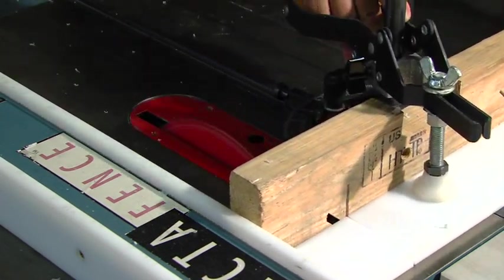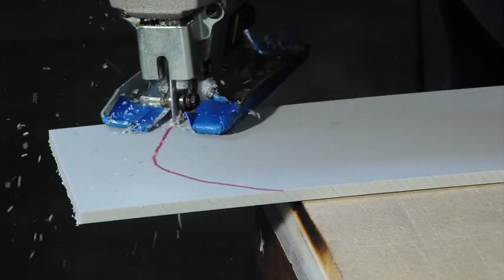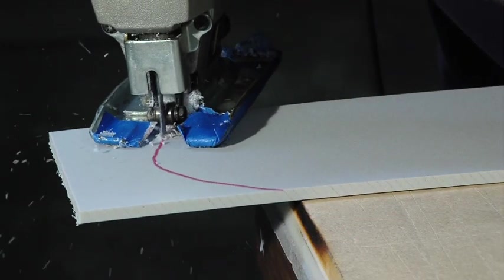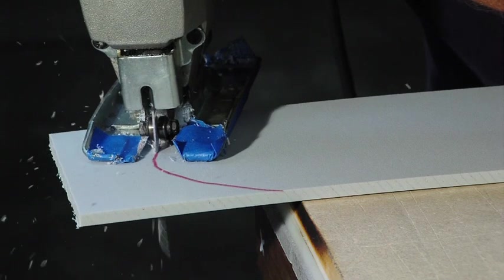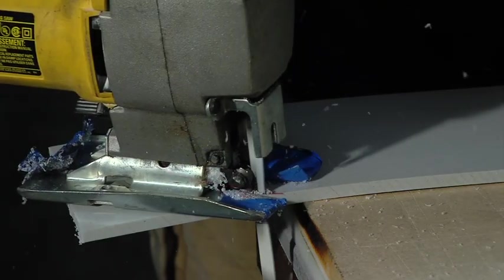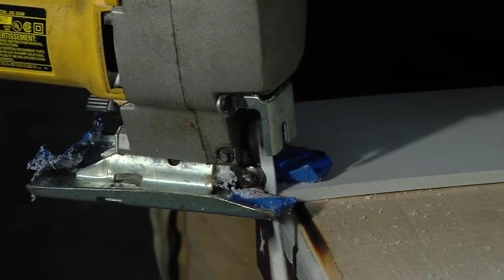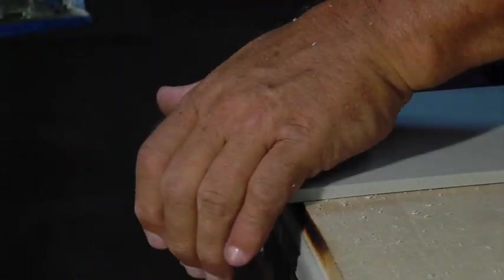Slower feed rates will minimize chatter marks on the cut edge. The surface of the material which is in contact with the saw table or base should be protected by leaving the protective masking on the sheet. Cutting King Starboard ST sheets does not produce noticeable airborne dust.